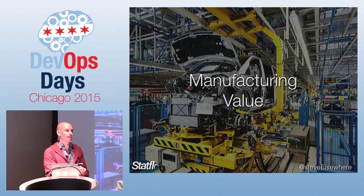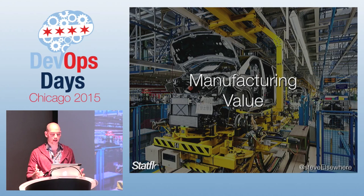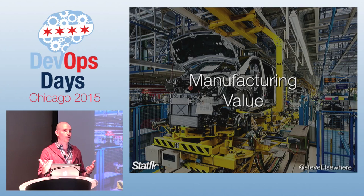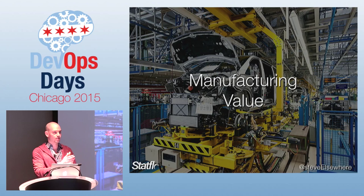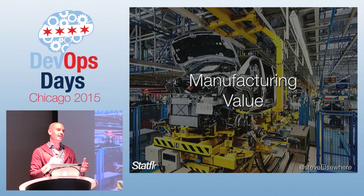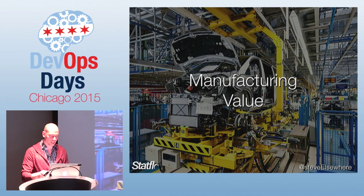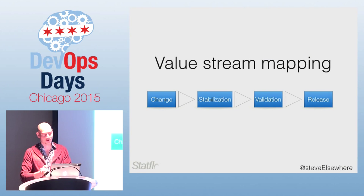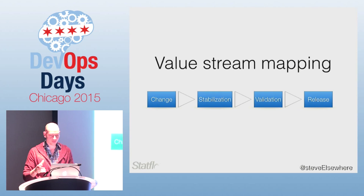The other thing about manufacturing value is the concept of flow — referred to as the first way in the Phoenix Project. Flow has a constant conflict around the progress of value against constraint. It's always flow versus constraint. You want to maximize throughput while also maximizing quality. An old-school way of thinking about this is a process and technique called value stream mapping, from lean process engineering. There's an old book called Learning to See that I recommend.